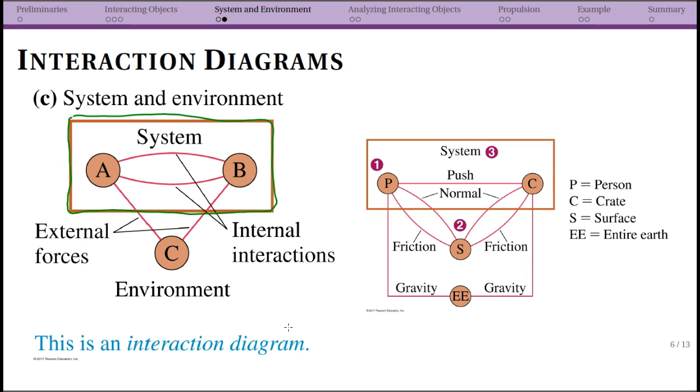And we can have objects that are external to the system, such as my earth or surface, but we don't consider those part of the system. What that means is we don't have to draw a free body diagram for those.